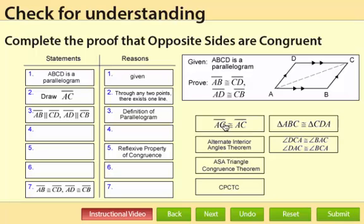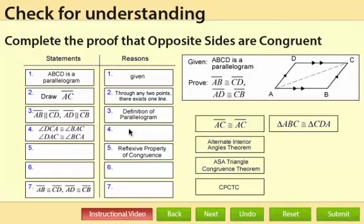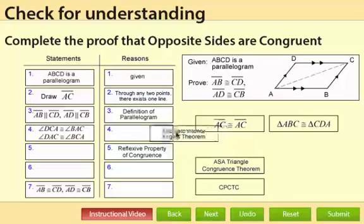So next, because we know the segments are parallel and we drew AC, we have some alternate interior angles. In fact, we have two pairs. So those two pairs of angles are congruent. So we need to identify the alternate interior angles theorem.